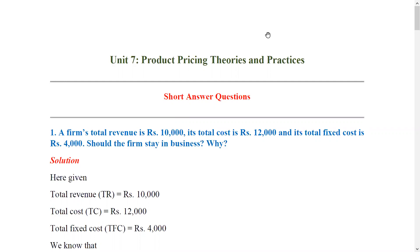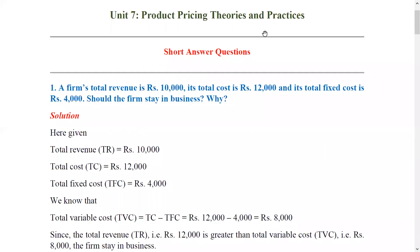As you can see, I will tell you about mathematical questions. The first question is: a firm's total revenue is Rs. 10,000, its total cost is Rs. 12,000, and its total fixed cost is Rs. 4,000. Should the firm stay in business?